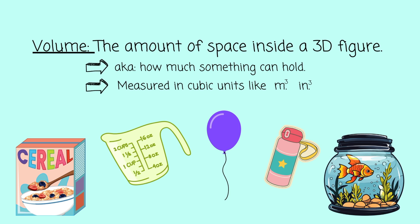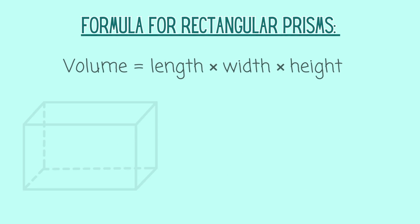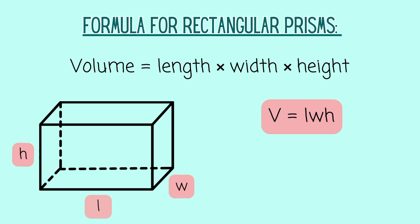Volume is measured in cubic units like meters cubed or inches cubed. The formula for a rectangular prism is just going to be length times width times height.